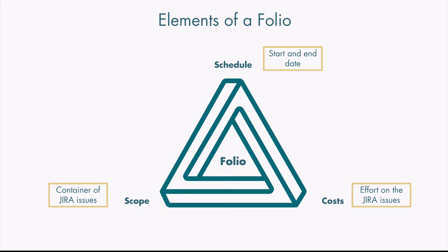The schedule of a folio is always the start date and the end date that you define. The costs on a folio are the efforts on the Jira issues that are within the scope of the folio. Each time you log work on a Jira issue within the scope, Tempo Budgets will convert this work log into a cost and track the actual costs on the folio. You can also easily enter other costs on Jira issues by adding a cost directly on the issue itself.